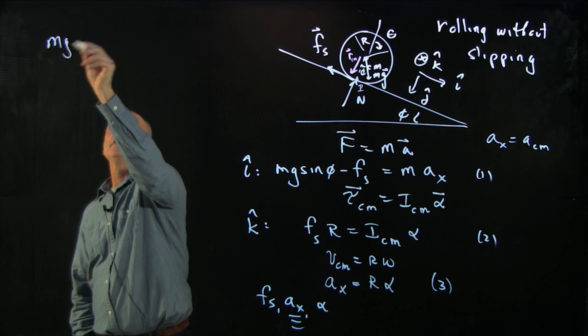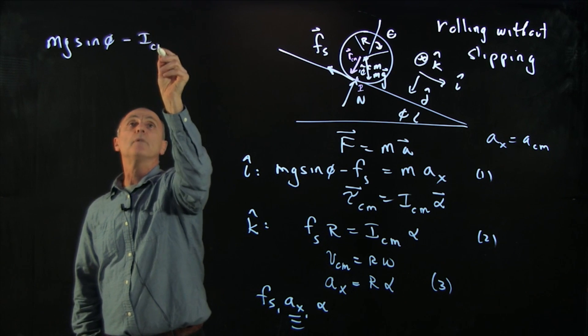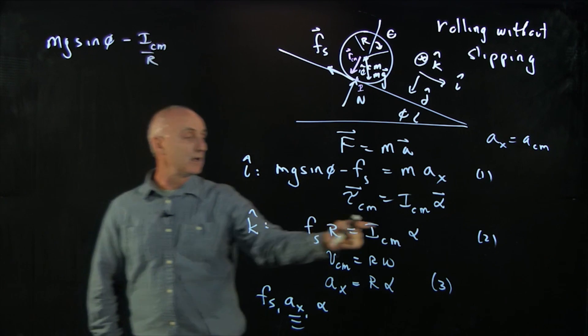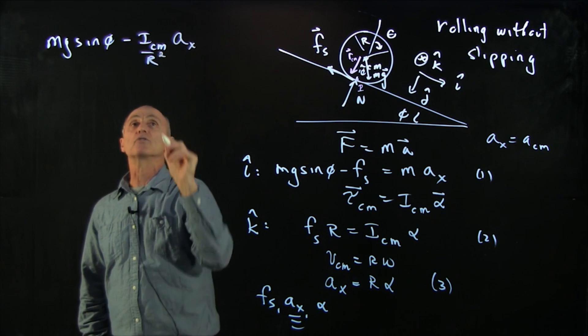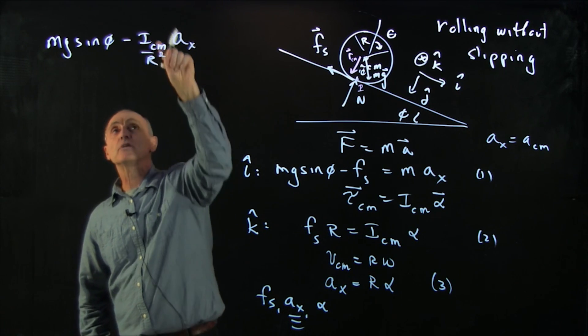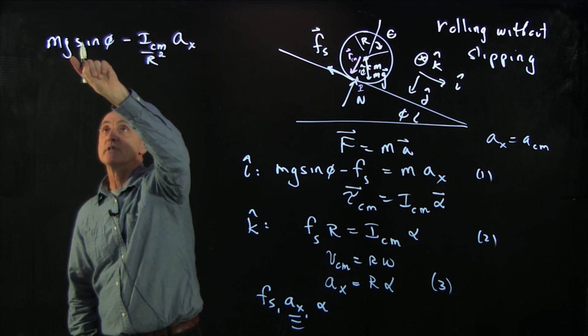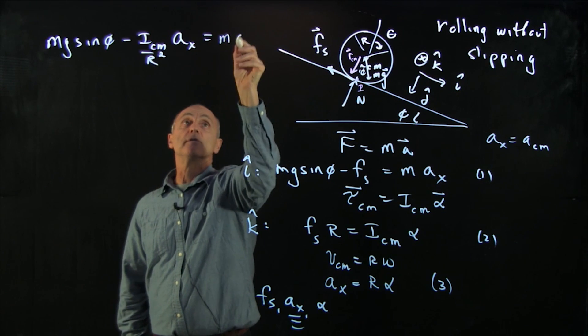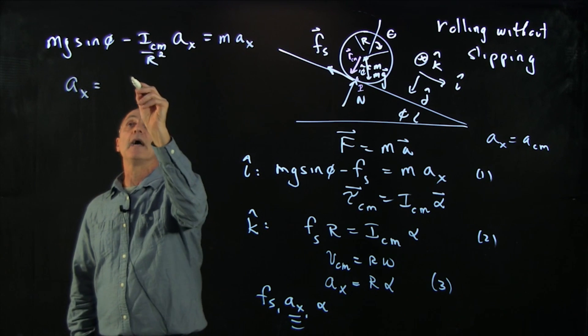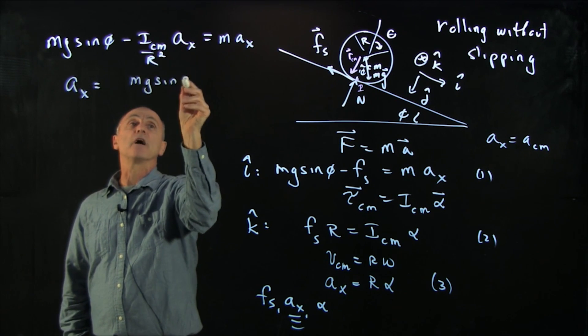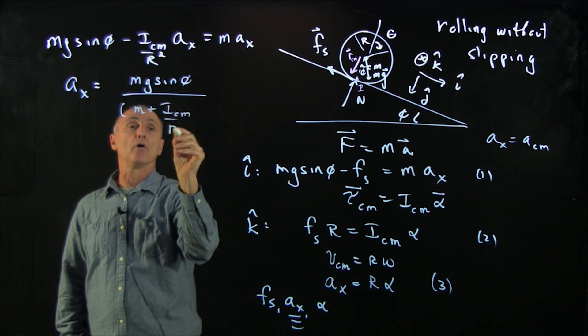And so I get mg sine phi. Now my fs is equal to i cm over r times alpha. But alpha is ax over r, so that's ax and an r squared. Notice dimensionally, i is mr squared, so this is just ma, the dimensions of force, mg dimensions of force. And that's equal to max. And now I can solve for ax. And I get mg sine phi divided by m plus i cm over r squared.